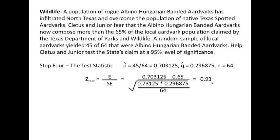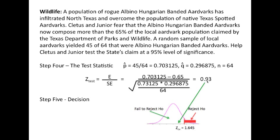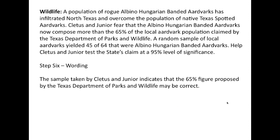Our Z test statistic is 0.93. Looking at where that falls in our diagram, it falls well within the fail-to-reject H0 region. The conclusion: the sample taken by Cletus and Junior indicates that the 65% figure proposed by the Texas Department of Parks and Wildlife may, indeed, be correct. Cletus and Junior, you're just out of luck.